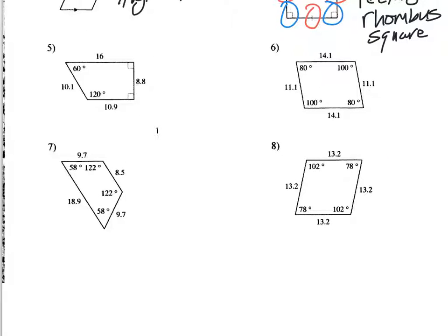All right, let's keep going. All right, what about number five? Number five, because these two angles equal 180, these two angles equal 180. That means these two sides are parallel. So that is a quadrilateral because it has four sides, but it's also a trapezoid. But it's not isosceles because these two sides are not equal.